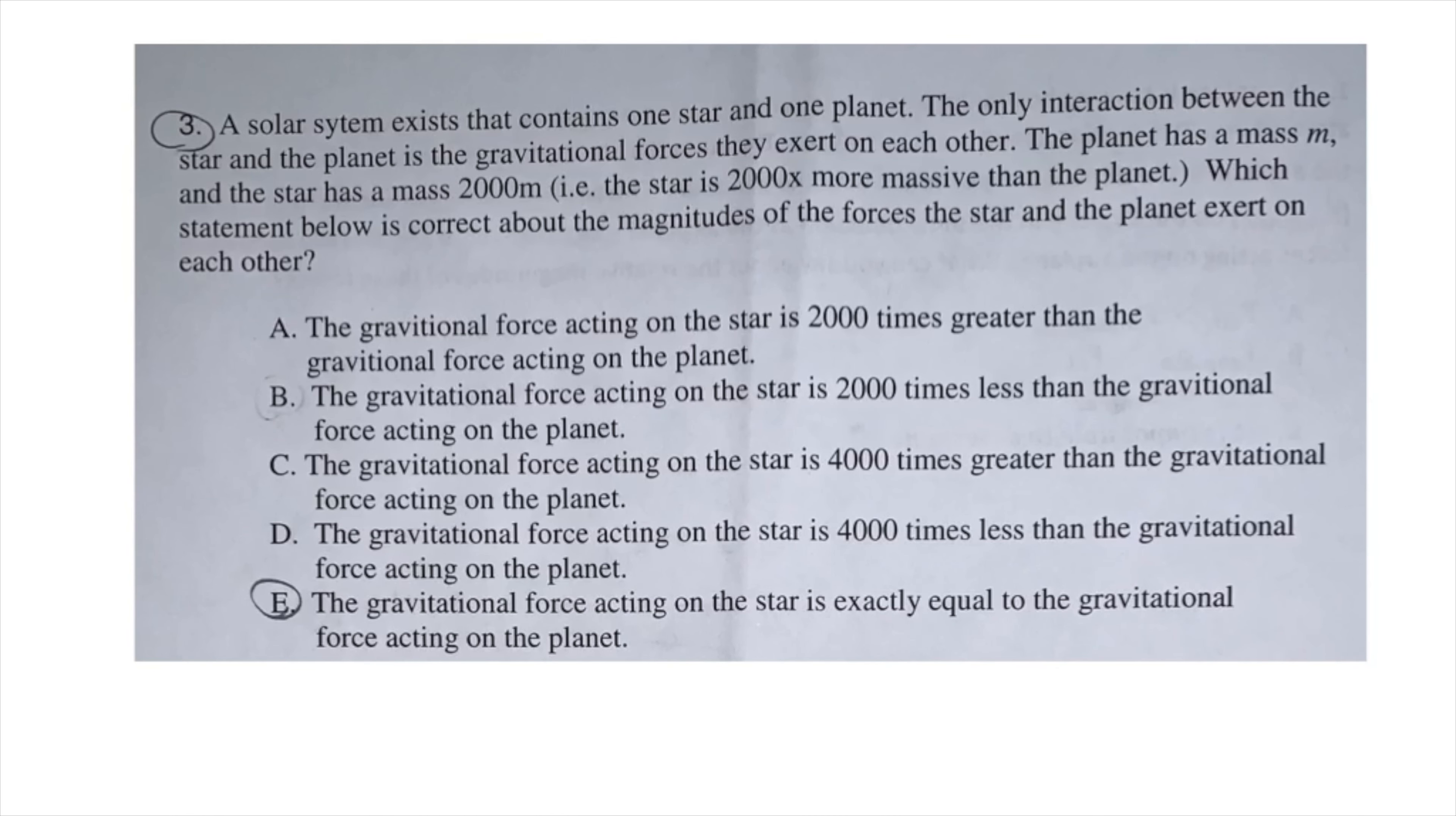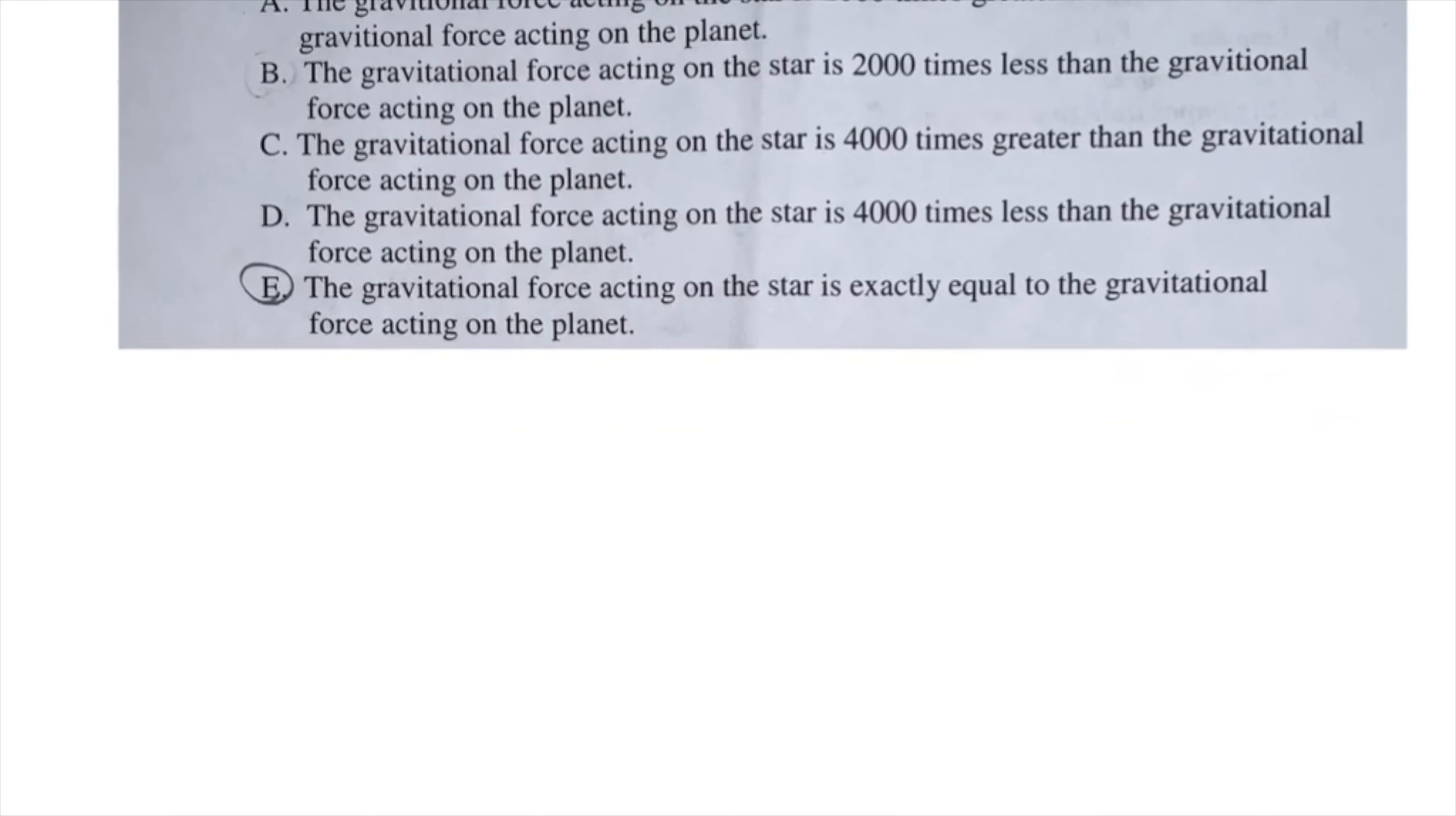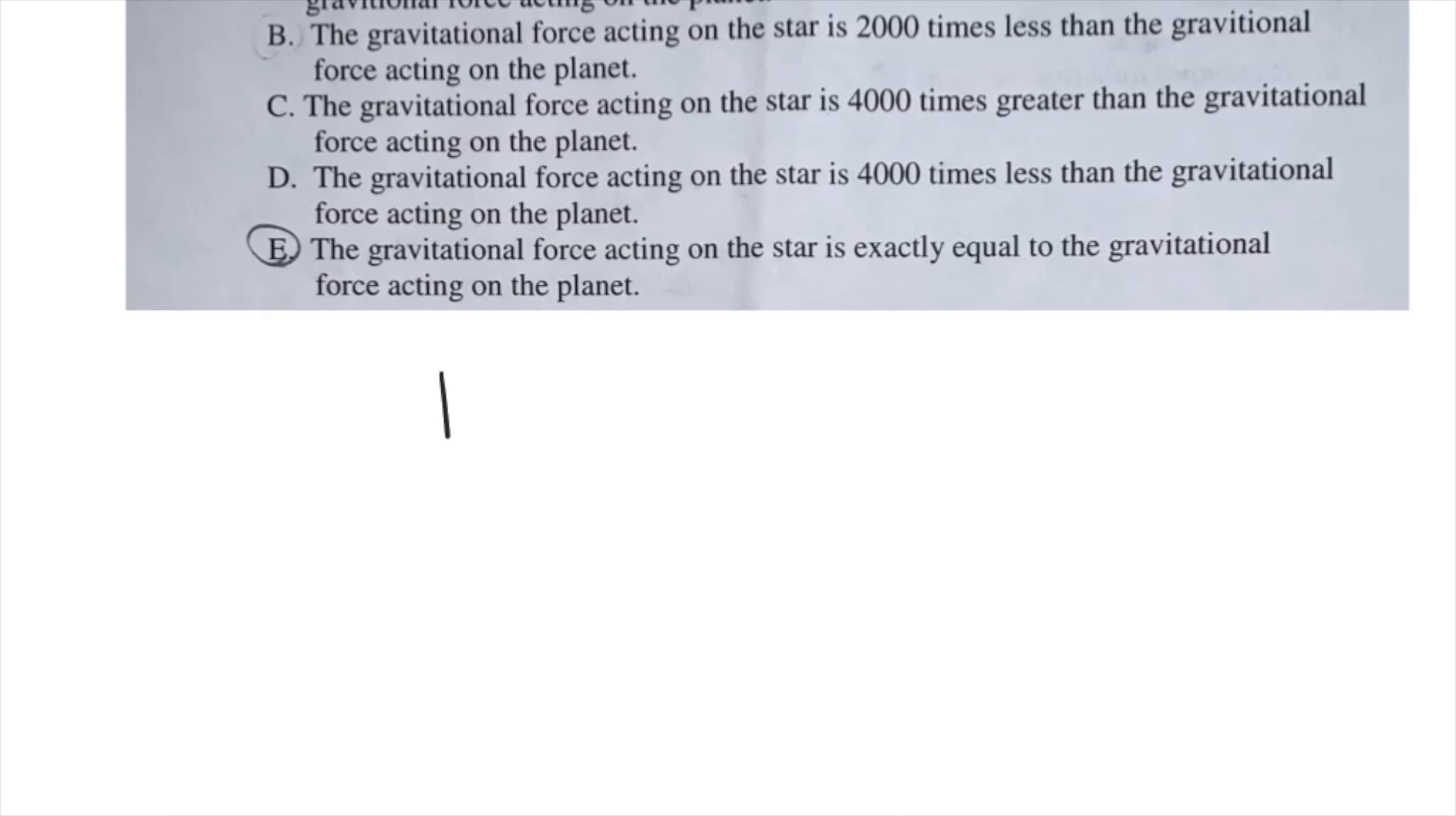Pause the video to read question three. This question has to do with the law of gravity, which is a formula that can be found on your formula sheet. The force of gravity equals the universal gravitational constant times M1 multiplied by M2 divided by the radius between the two masses squared.